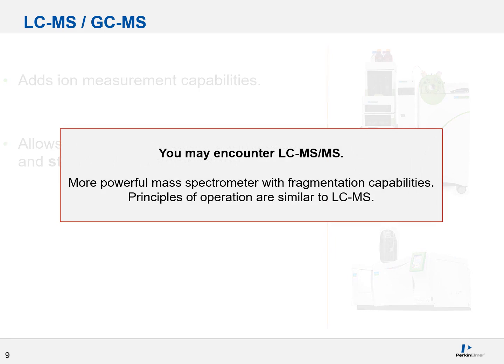You may also encounter a technique called LC-MS-MS. This is not a transcription error — it is in fact a valid technique. The type of mass spectrometer used here is more powerful than one used in typical LC-MS, since it has fragmentation capabilities that really allow you to improve your structural characterization. The principles of operation are similar to LC-MS, but keep in mind this is a more powerful technique, which means method development is quite complicated.